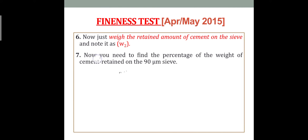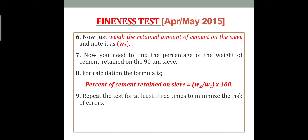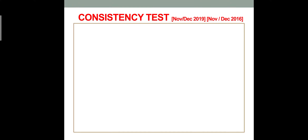After sieving, take the weight of the cement retained on the sieve — that is W2. Then use the formula: W2 divided by W1 multiplied by 100 to get the percentage of cement retained. This gives you the fineness of the cement. The fineness should not be greater than 10 percentage.